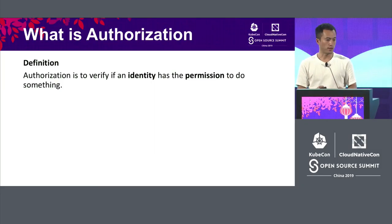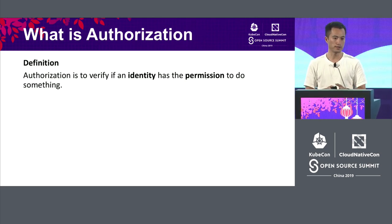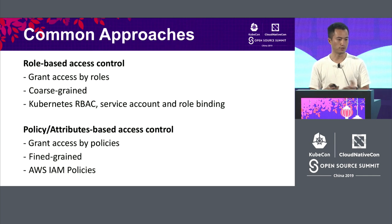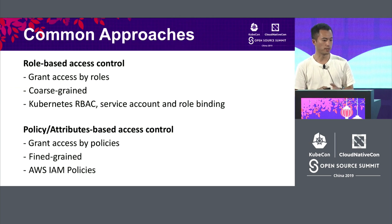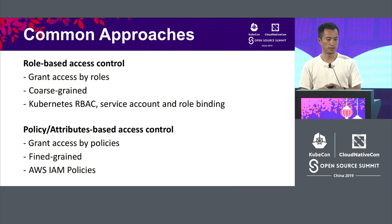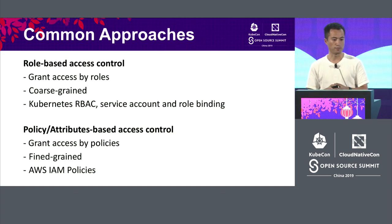First I would like to talk about authorization. Authorization is to verify if an identity has permission to do something. There are many common approaches, like role-based access control, which grants access by roles — it is coarse-grained. A typical example is Kubernetes RBAC. There's also policy or attribute-based access control, which grants access by policies — it is more fine-grained. A typical example is AWS IAM policies.